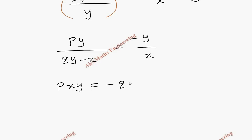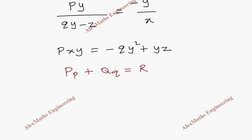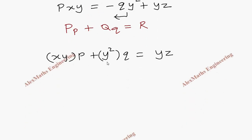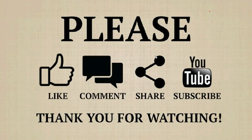Cross multiplying gives pxy equal to minus qy squared plus yz. Rearranging into the standard form Pp plus Qq equal to R, the p term is xy into p, and taking the q term to this side gives plus y squared into q, with the right-hand side being yz. Taking y as a common factor and dividing by y, we get x times p plus y times q equal to z. This is our required partial differential equation after eliminating the arbitrary function f.